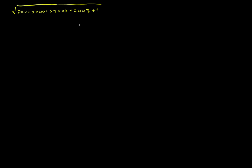Let us see what happens when we take four consecutive integers. For n equal to 1, we get 1 times 2 times 3 times 4 plus 1. That is 24 plus 1 equals 25, which can be written as 5 squared. So the square root of this expression is 5.